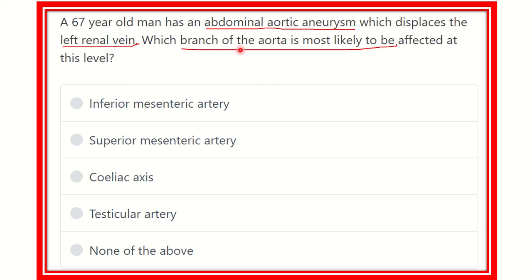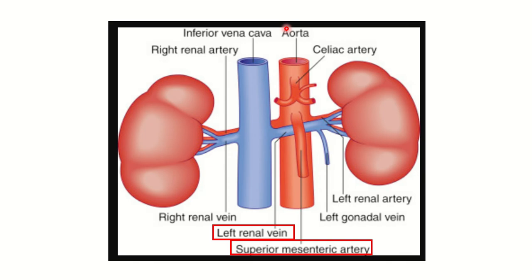Here we can see the inferior vena cava, and when there is an aneurysm in the abdominal aorta, it is very close to the left renal vein. If the left renal vein is displaced, we can see there is an artery very close to it that will be affected. This artery is the superior mesenteric artery, which is very close to the left renal vein, and any aneurysm affecting the vein will displace this superior mesenteric artery.